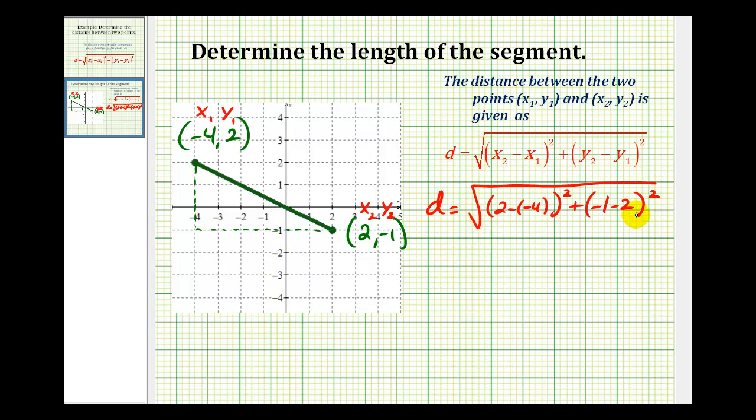We do need to be careful and watch our signs here. Let's go ahead and simplify this one more step. 2 minus negative 4 is going to be 2 plus 4. That'll be 6². Here we'll have (-3)².